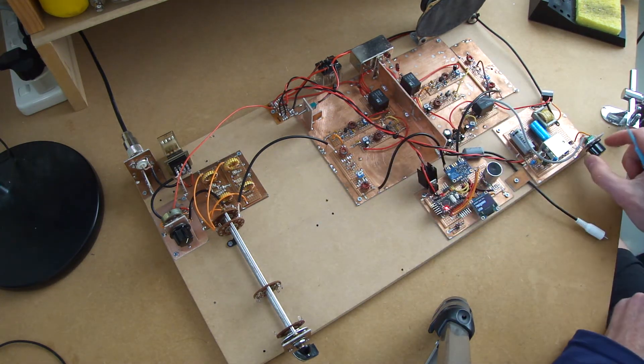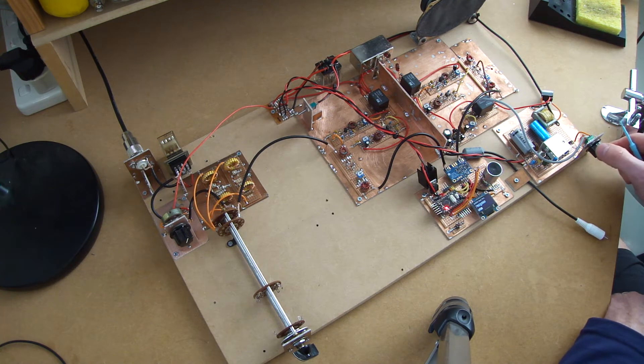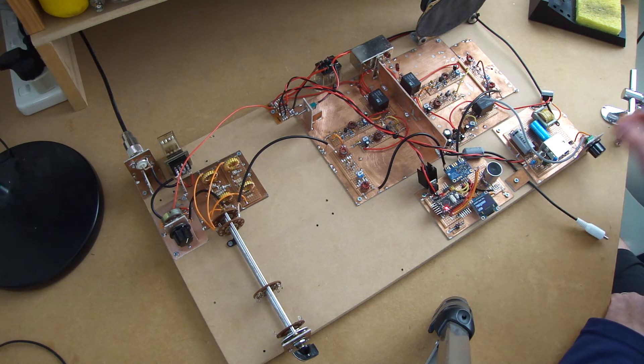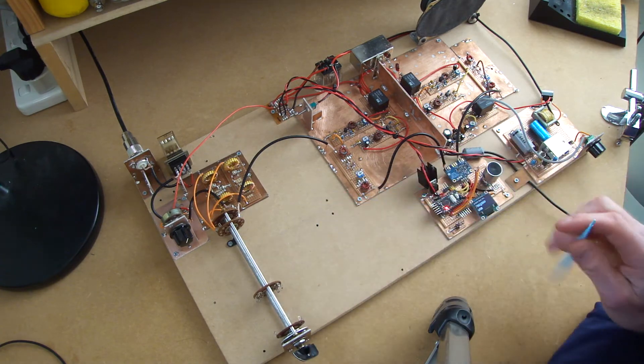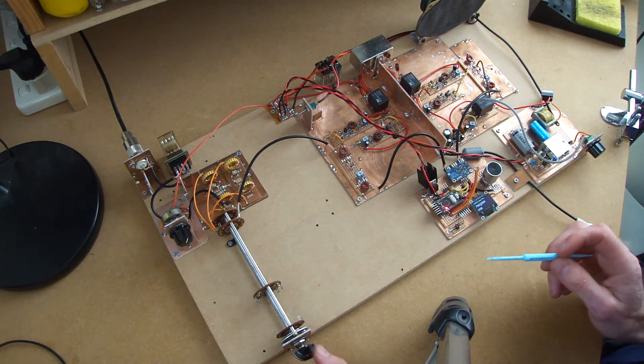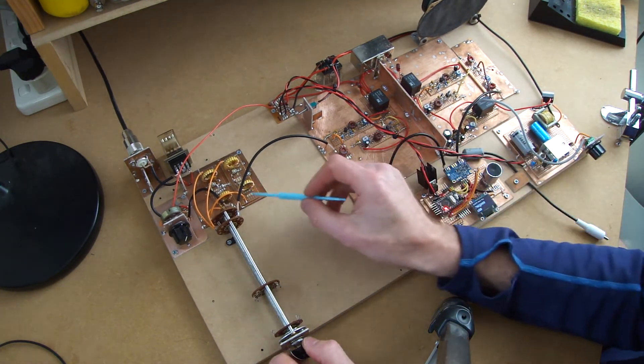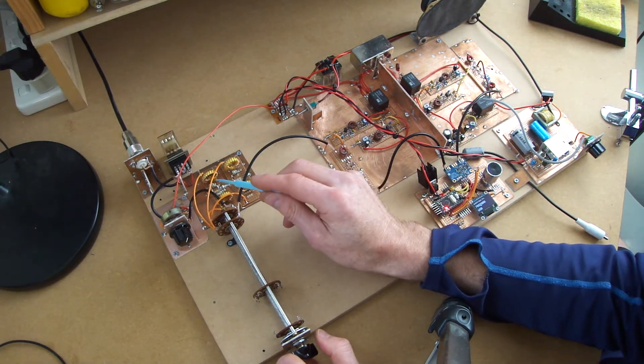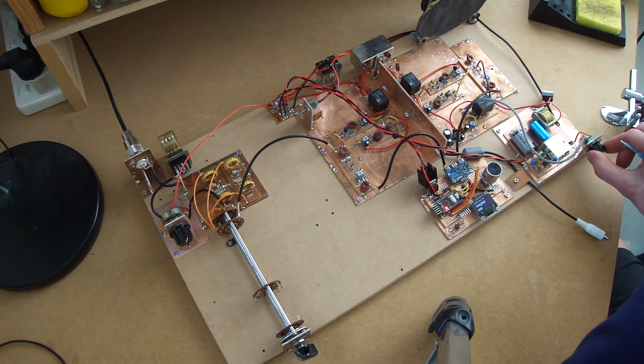Basically remaking a single sideband transceiver here, just utilizing some old parts out of some other radios. So this will be the band switch. At the moment we've just got the 40m and 20m bandpass filters coming in.